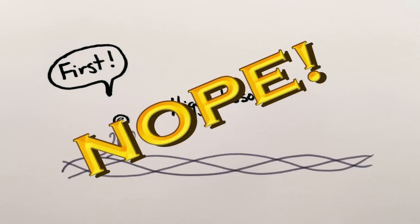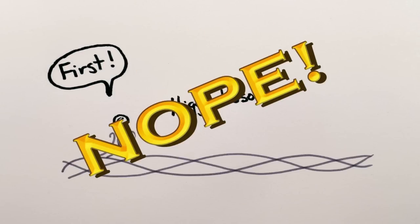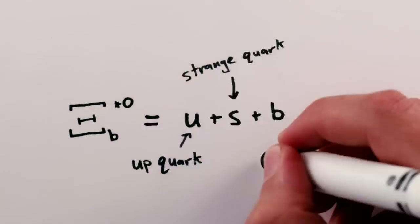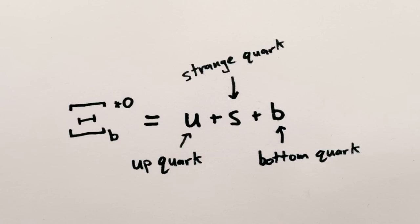In fact, the Higgs boson isn't even the first new particle to be uncovered at the Large Hadron Collider. The XiB particle, basically a heavy version of the neutron, was actually found several months earlier. You probably didn't hear much about it because the XiB is just a combination of quarks that we already know exist, so it's not really that exciting.